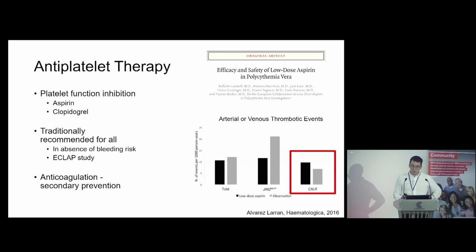Regarding systemic anticoagulation — drugs such as warfarin, heparin, and newer direct oral anticoagulants — these are typically used for secondary prevention of thrombosis in patients who have had a thrombotic event, to prevent further recurrence, and are generally required long-term.